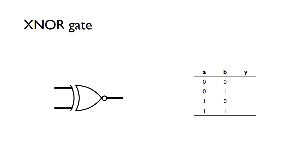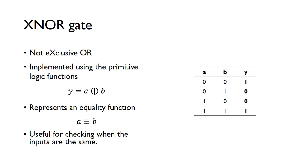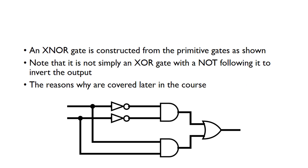An XNOR gate is essentially an XOR gate with the output inverted. We write out the XOR function and invert it — this gives us the XNOR truth table. XNOR represents an equality function: the output is a one when the inputs are the same. Like XOR, the XNOR gate is not a primitive gate — it is constructed from AND, OR, and NOT gates combined in a particular way.